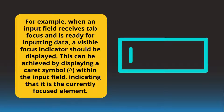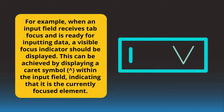For example, when an input field receives keyboard focus and is ready for inputting data, a visible focus indicator should be displayed. This can be achieved by displaying a caret symbol within the input field, indicating that it is the currently focused element.